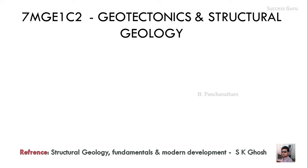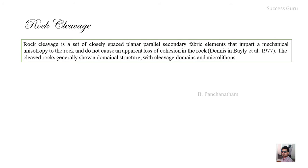Good morning students. Today's topic is rock cleavage. Rock cleavage is a set of closely spaced planar parallel secondary elements that imparts a mechanical anisotropy to the rock and does not cause an apparent loss of cohesion in the rock. This is the simplest definition, given by Dennis in 1977. According to him, rock cleavage is a secondary fabric element imparted after the formation of the rock, causing anisotropy — a change of any physical property according to direction.